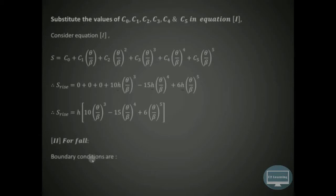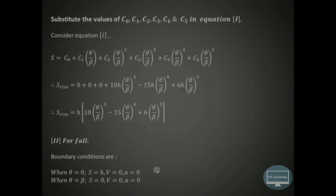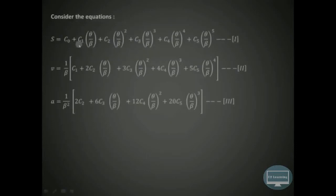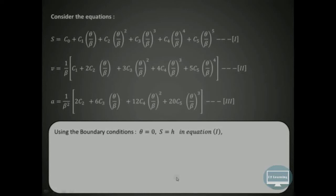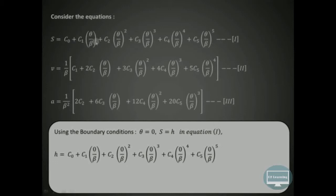Now for the fall, we use the boundary conditions for the return stroke. In this case the follower is already in the raised position at height H. So when theta = 0 for fall motion, displacement equals H, velocity is 0, and acceleration is also 0. We have already derived expressions for displacement, velocity, and acceleration; we just apply the new boundary conditions.